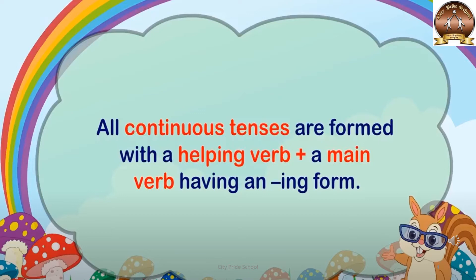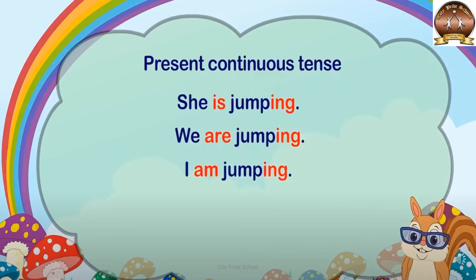Generally, in all continuous tenses, we use helping verb plus the main verb in ing form. In present continuous tense, we use only three helping verbs: is, are, and am. 'Is' is generally used with singular nouns — for example, he, she, it. 'Are' is used with plural nouns — like we, they. And 'am' is used only with I. Always remember: is, am, and are are used as helping verbs in present continuous tense.